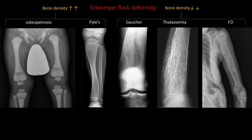If osteopetrosis is associated with cranial nerve palsy, it is called cranio-metaphyseal dysplasia. Moving to the next category: if there is osteopenia, it could be Gaucher disease, thalassemia, or fibrous dysplasia. In Gaucher disease, besides osteopenia, we can see how the cortex is paper-thin with metaphyseal flaring.